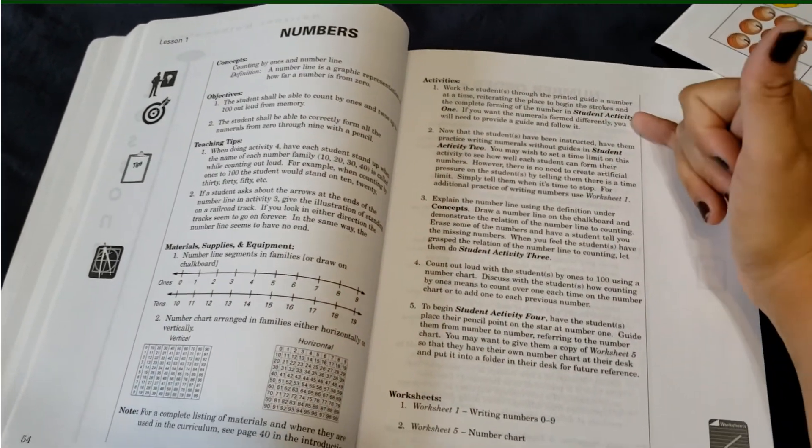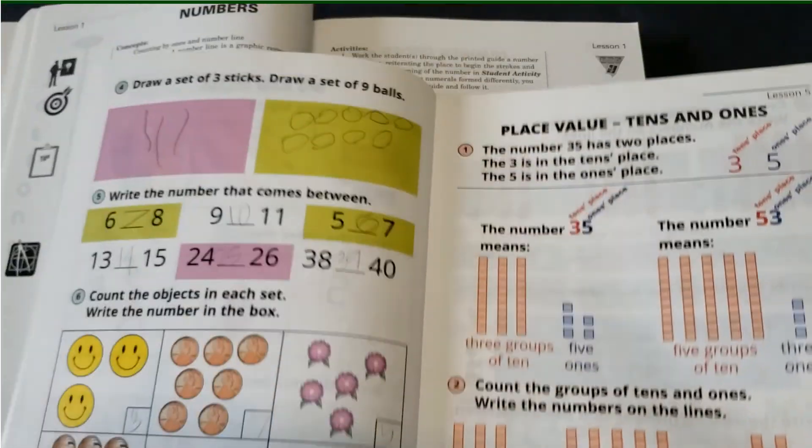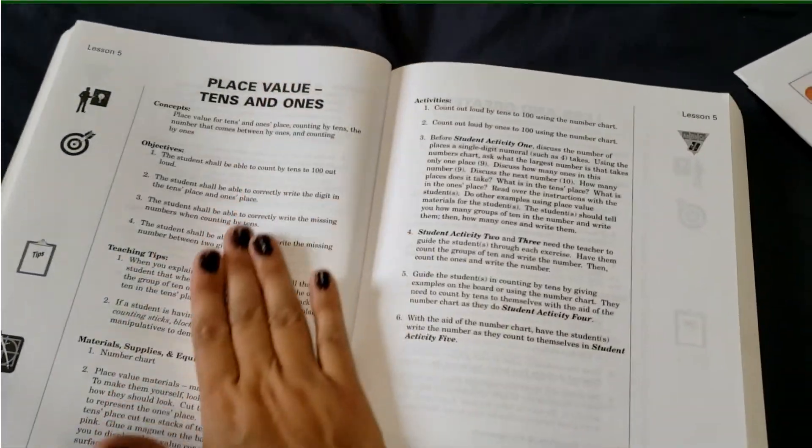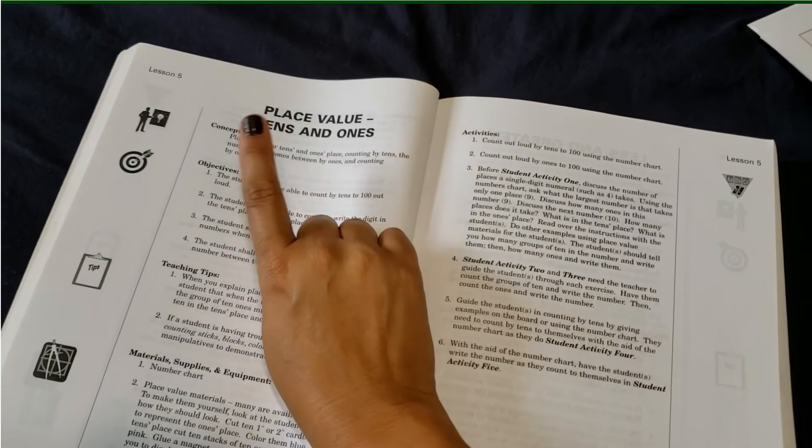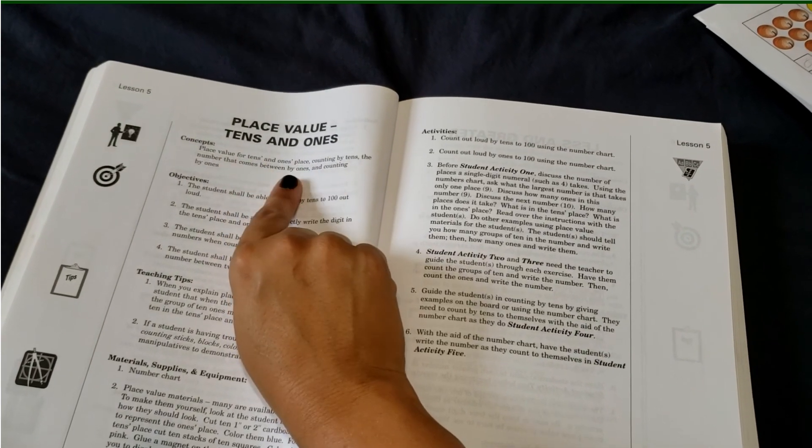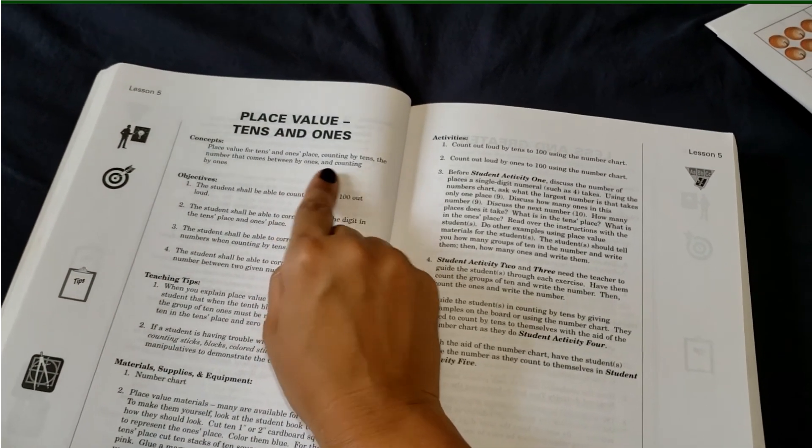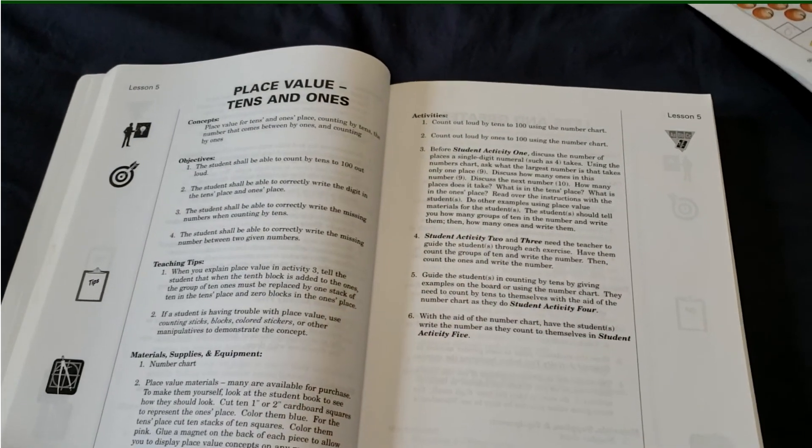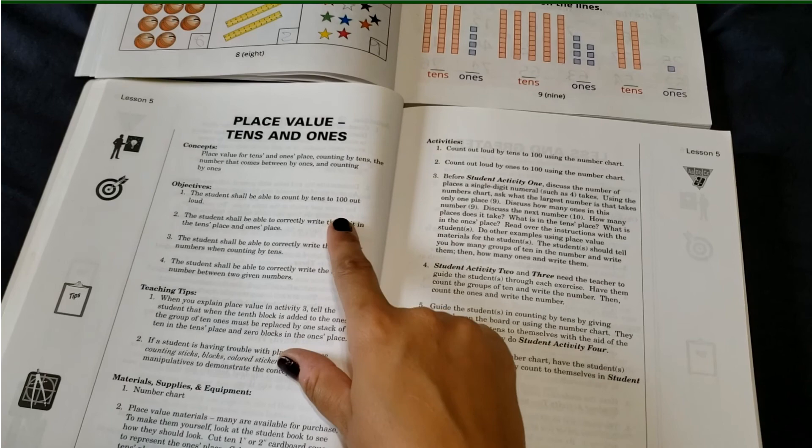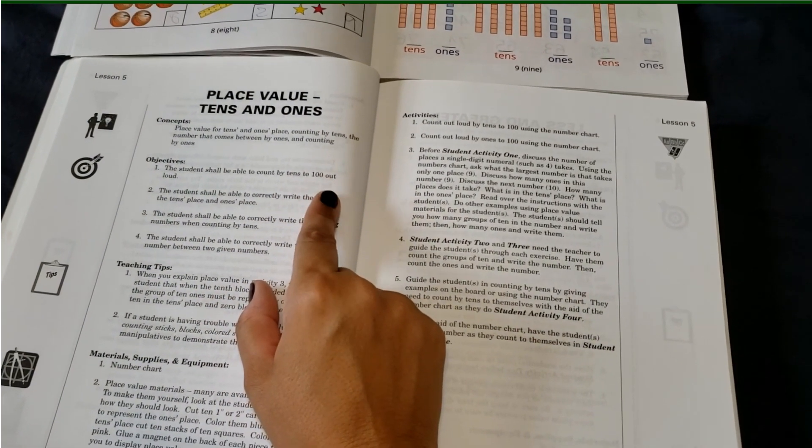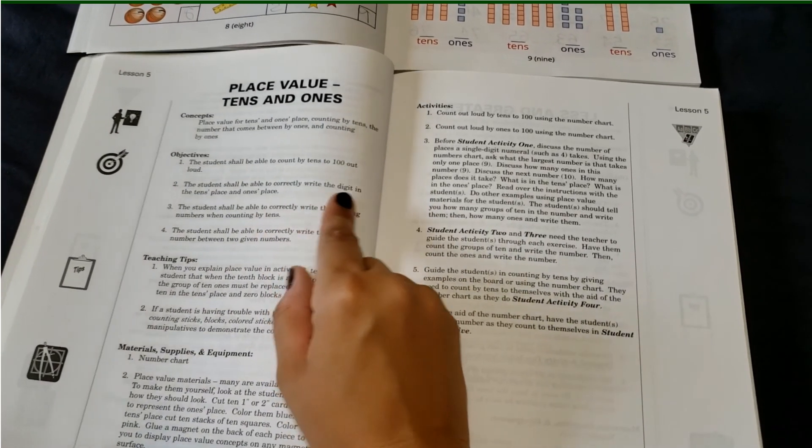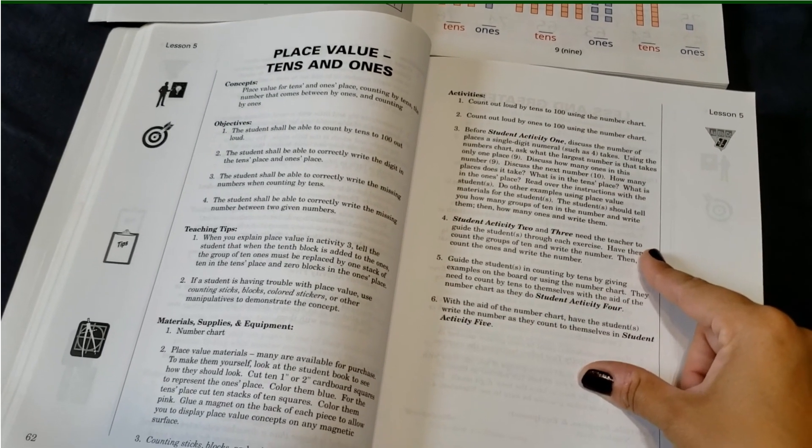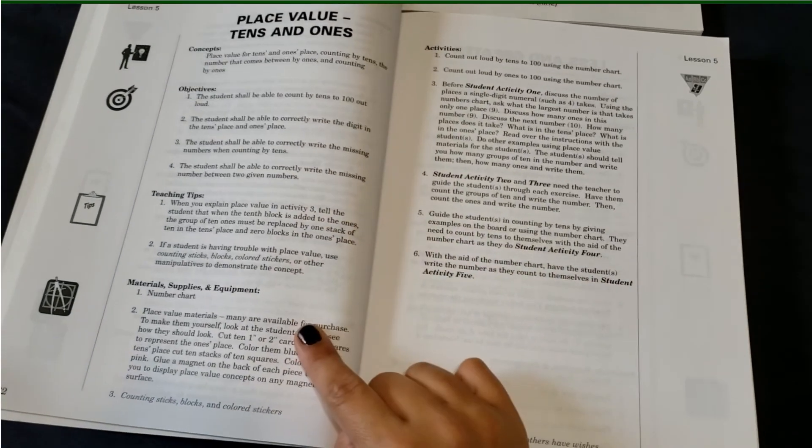And then it also gives these activities for each section. So if you look at the workbook, well, here, let's look at lesson five together, which is the one that we're getting ready to do tomorrow, that I need to kind of get myself prepared for. So we're going to be introducing or covering the tens place and ones place place values. Okay. We're also going to be counting by tens and the number that comes between by ones and counting by ones. Okay. So those are the concepts that we're going to be working on. Objectives, the student should be able to count by tens to 100. So we'll practice our skip counting to correctly write the digit in the tens place and ones place and correctly write the missing numbers counting by tens. And we'll be able to correctly write the missing number between two given numbers. Okay.